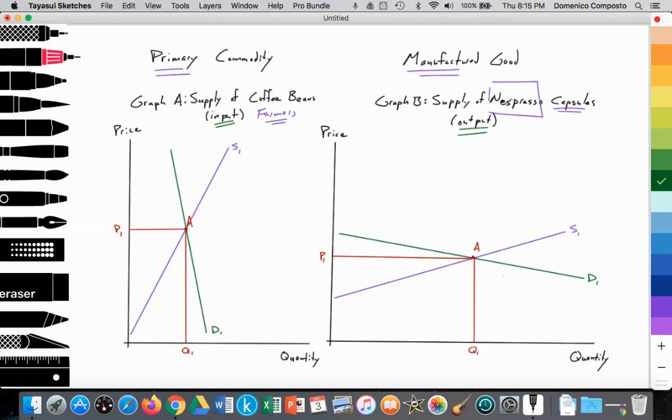That increase in the price was driven by an increase in demand by Nespresso. Nespresso, in 2010, released their coffee machine, their Nespresso machine, for households. And because households were demanding their machine and the capsules, that caused Nespresso to increase their demand for the key input of coffee beans. So in 2010-2011, we see Nespresso going to the input market and increasing their demand for coffee beans. So demand shifts out from D1 to D2. What happens to price? Price rises from P1 to P2, although there's not a dramatic increase in the quantity supplied due to length of time.